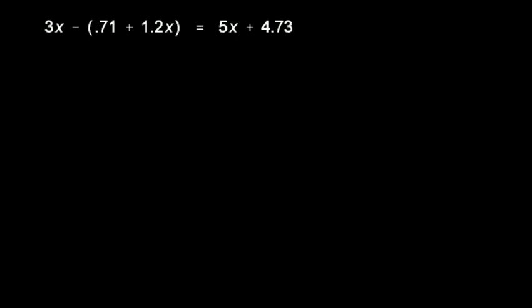Let's look at one more example. 3x minus this expression in parenthesis here, 0.71 plus 1.2x equals 5x plus 4.73.